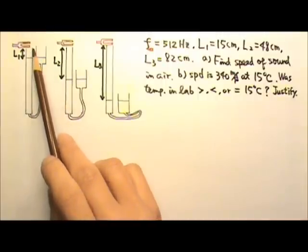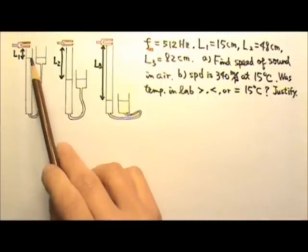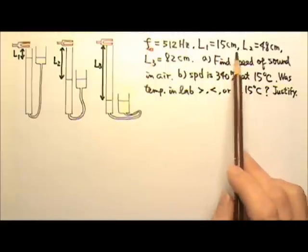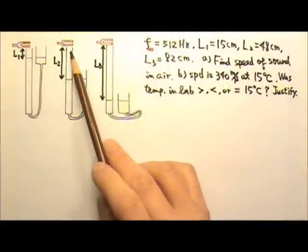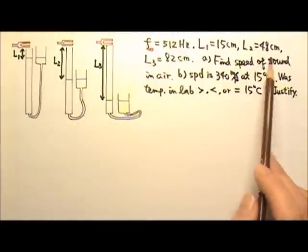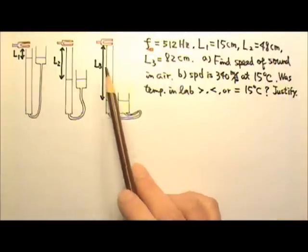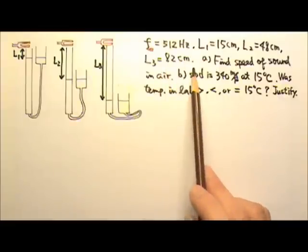As the water level is lowered from the very top, the first resonance is heard at L1 equals 15 cm, the second resonance at L2, 48 cm, and the third resonance at L3, 82 cm.